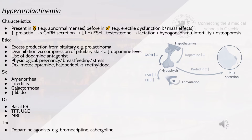The etiology of hyperprolactinemia includes excess production from the pituitary gland such as a prolactinoma, disinhibition via compression of the pituitary stalk leading to decreased dopamine, use of dopamine antagonists, and physiological causes such as pregnancy, breastfeeding, stress or drugs such as alpha-methyldopa, haloperidol or metoclopramide. Symptoms include amenorrhea, infertility, galactorrhea and decreased libido. Diagnosis is through checking basal prolactin, thyroid function tests, urea and electrolytes and MRI. Treatment involves dopamine agonists such as cabergoline or bromocriptine.